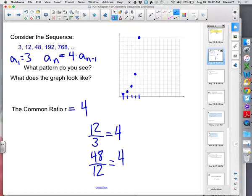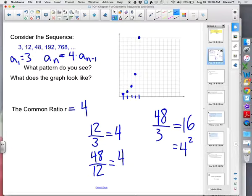Now, notice I'm dividing consecutive terms. What would happen if I divided a term by not the previous one, but the one before that? What does that come out to? 16, which happens to be 4 squared, which makes sense. Because how many steps did we take to get from 3 to 48? 2. So we would have had to multiply by 4 twice.